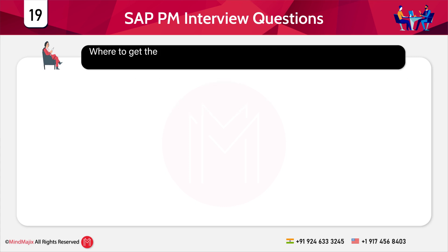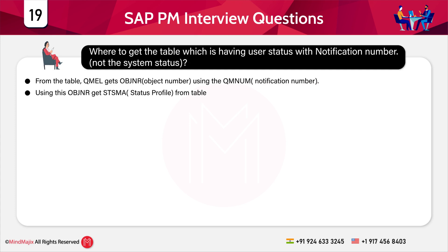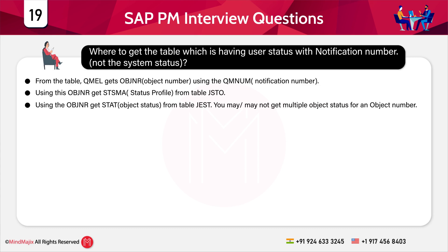Where can you get the table having user status with notification number? From table QMEL, get the object number using QMNUM (the notification number). Using this object number, get the status profile from table JSTO. You may get multiple object statuses for one object number. System status numbers start with 'E' and user status numbers start with 'I'. To get the status text, use the status number and STSMA to retrieve text from table TJ30T.